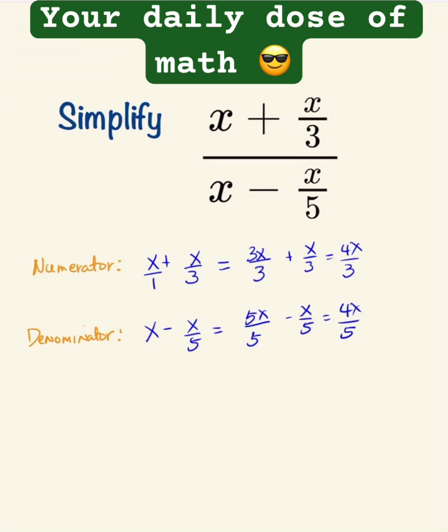We're going to put this back together, the numerator over the denominator. We have 4x over 3 divided by 4x over 5.